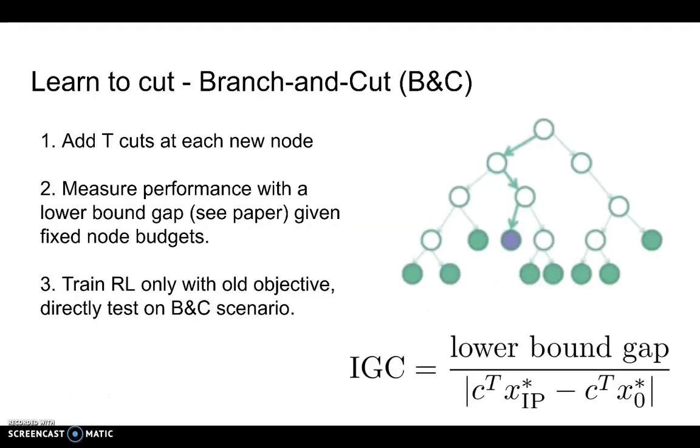In the last sort of experiment, we look at the combination of a learned cutting plane algorithm with branch and bound, which is also called branch and cut. In this case, we consider adding T cuts at each new node generated by the branch and bound algorithm. We measure the performance as IGC again. Please refer to the paper for more details about how we define this IGC, which is also used for evaluating the quality of the cutting plane algorithms during this procedure.